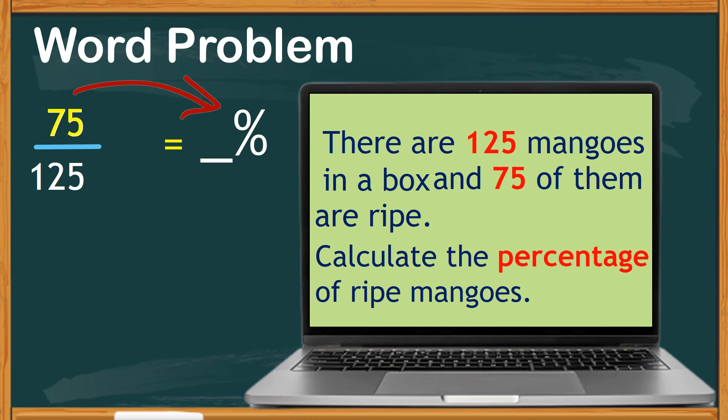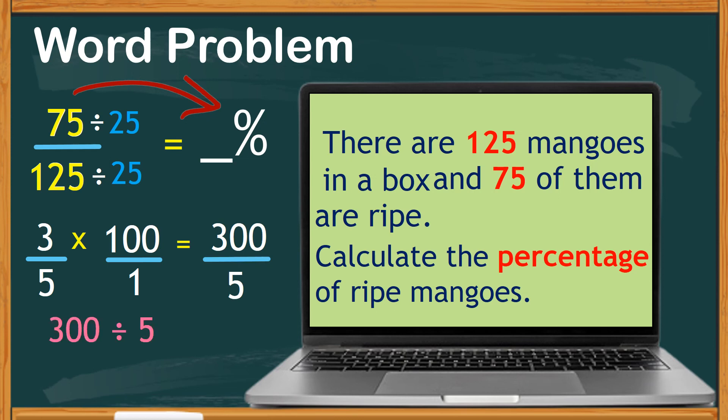This problem can be solved by just converting fraction into percentage by multiplying the fraction by 100. The fraction 75 over 125 can still be reduced into simplest form by dividing both numbers by 25, giving us an equivalent fraction of 3 over 5. Multiply by 100 with 1 as the denominator. We now have 300 over 5, or 300 divided by 5, which is 60. There you have it. For our answer, we have 60% of the mangoes are ripe.